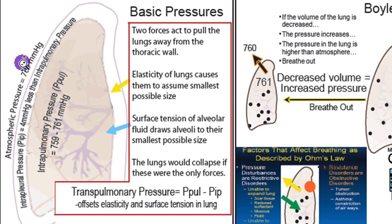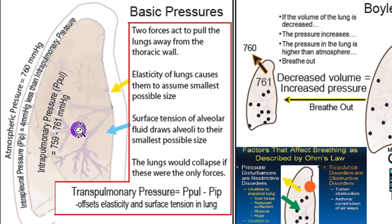Atmospheric pressure is around 760 millimeters of mercury. Inside the lungs, it's called intrapulmonary pressure, abbreviated P-PUL. That pressure is generally slightly lower or slightly higher than atmospheric pressure, depending on whether a person is breathing in or breathing out — so it could be from 759 to 761 millimeters of mercury.